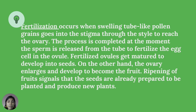Fertilization occurs when swelling tube-like pollen grains go into the stigma through the style to reach the ovary. The process is completed at the moment the sperm is released from the tube to fertilize the egg cell in the ovule. Fertilized ovules mature and develop into seeds. On the other hand, the ovary enlarges and develops to become the fruit. Ripening of the fruit signals that the seeds are already prepared to be planted and produce new plants.